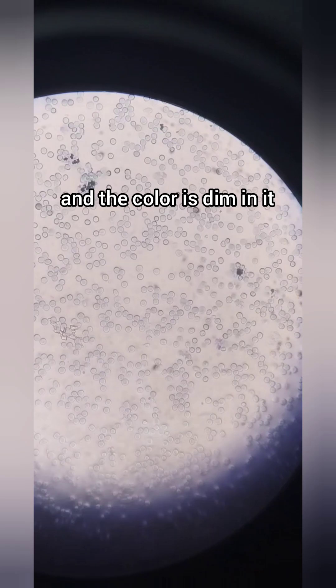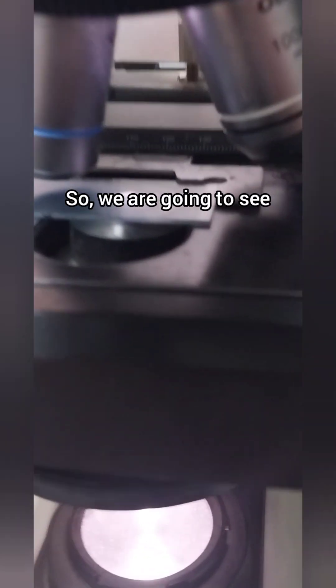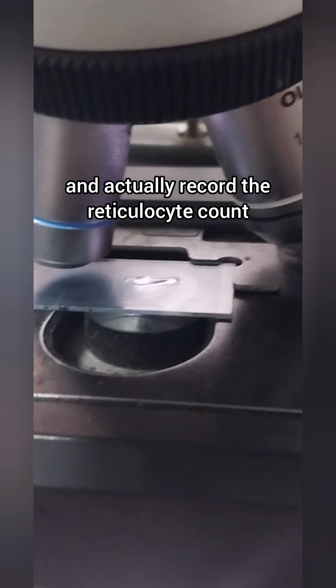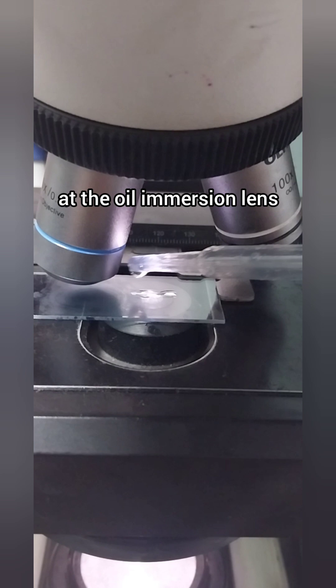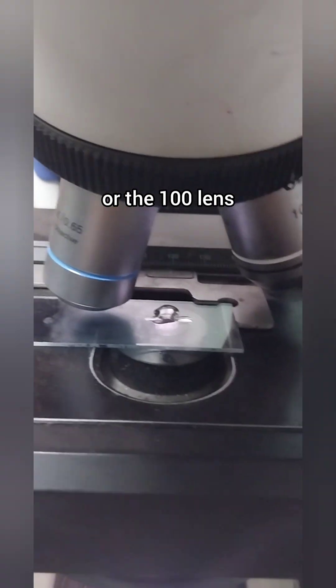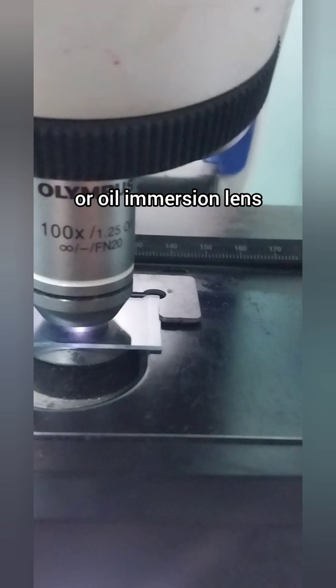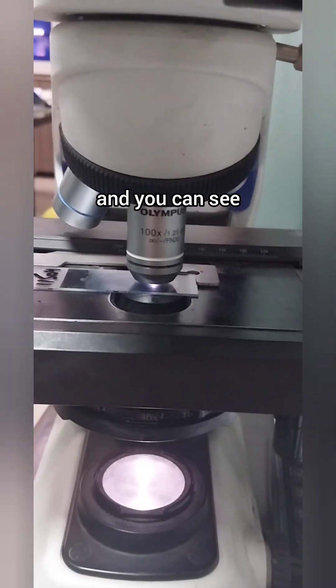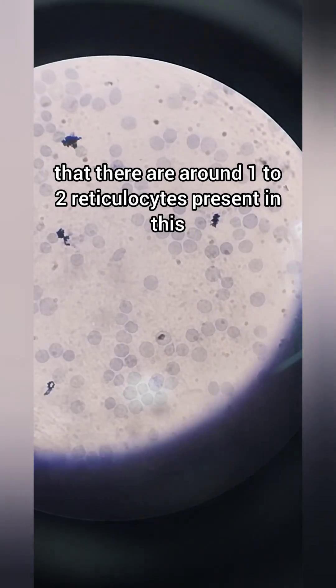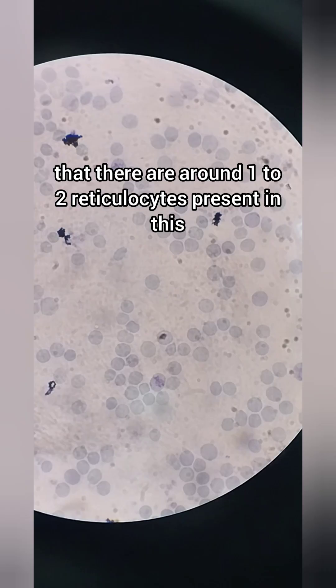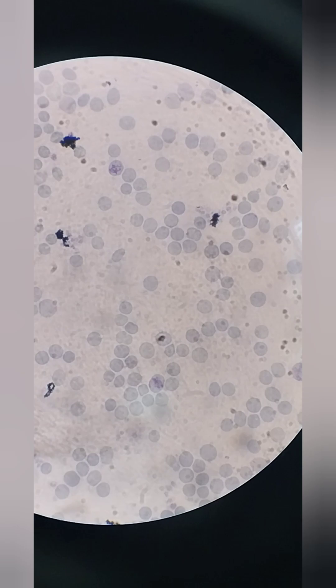We are going to see and actually record the reticulocyte count at the oil immersion lens or the 100x lens. Here we are focusing at 100x or oil immersion lens, and you can see that there are around one to two reticulocytes present in this one field of RBCs.